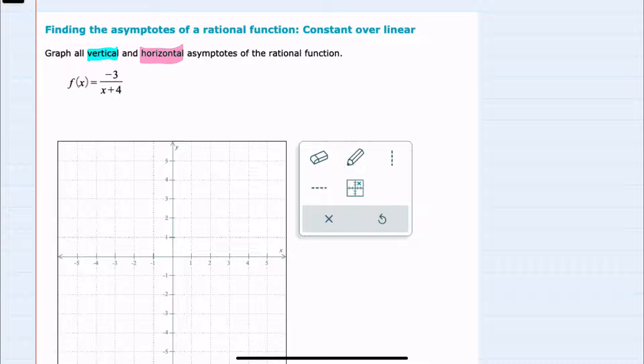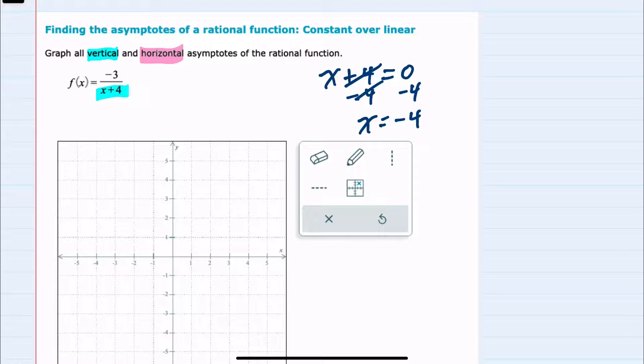Since it's already been simplified, our vertical asymptotes will occur where that denominator equals zero. So our denominator here of x plus 4 would equal zero where x equals negative 4. So we have a vertical asymptote where x equals negative 4.